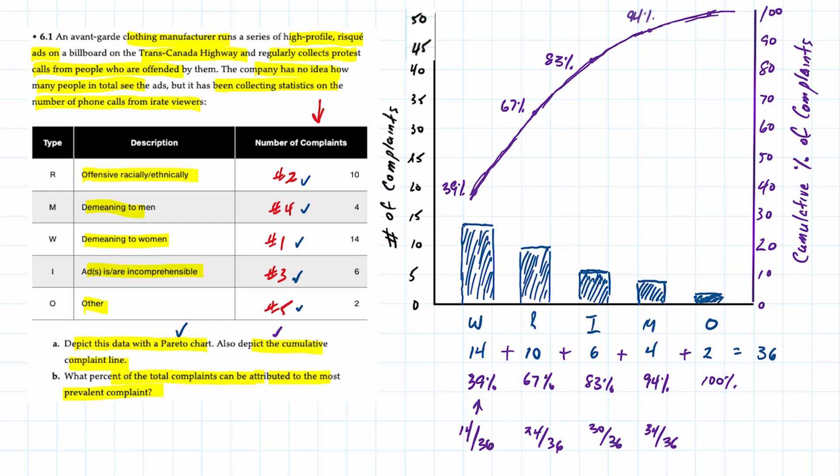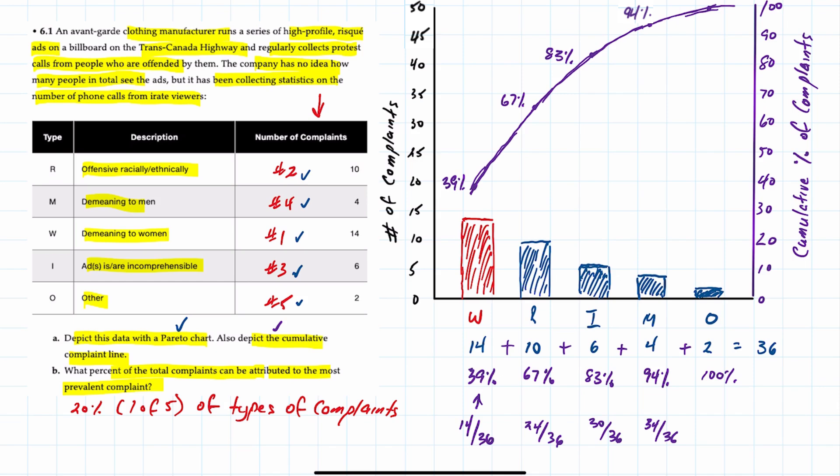So what does this chart tell us? Well it tells us that the most common complaint is W or demeaning to women representing 39 percent of the total complaints. And since there are five different types of complaints we can also say that 20 percent or one of five of the types of complaints drives 39 percent or close to 40 percent of total complaints.